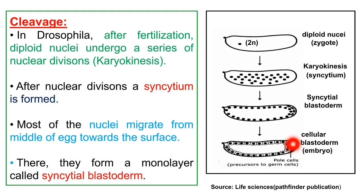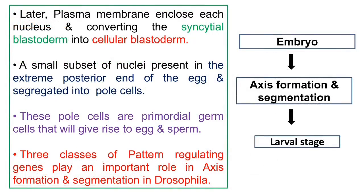A small set of nuclei present at the extreme posterior end form cells called pole cells. These pole cells are primordial germ cells that will give rise to egg and sperm later. The embryo will then undergo axis formation and segmentation and finally proceed to the larval stage.